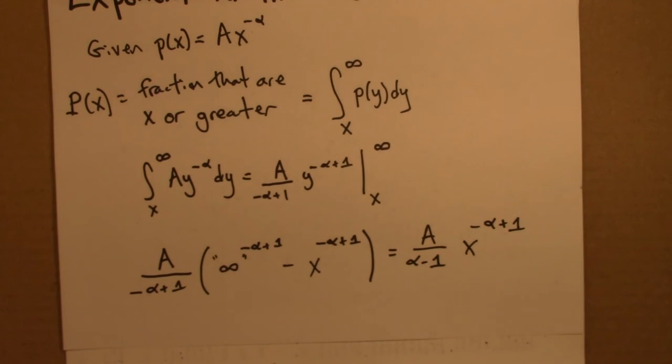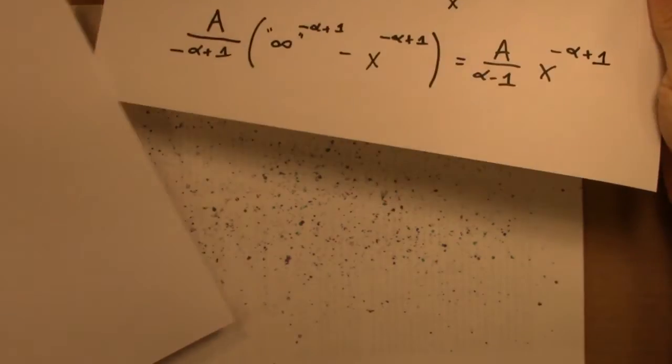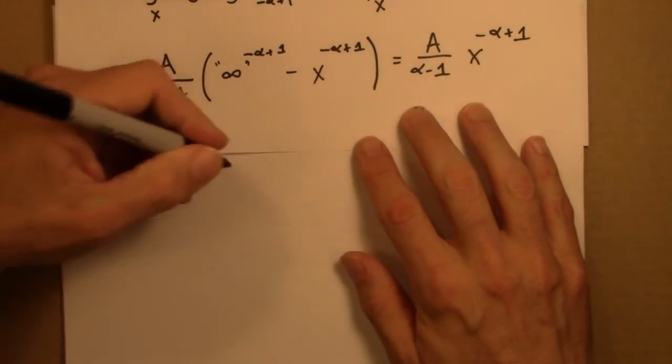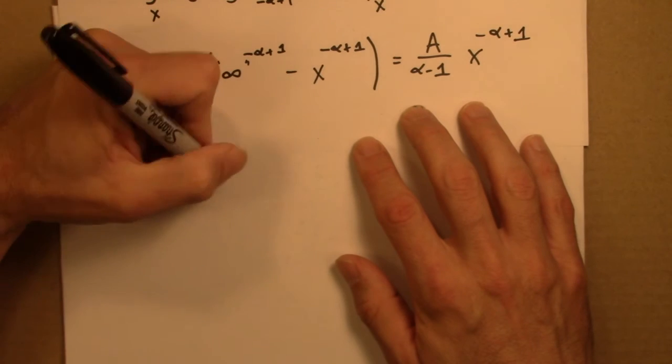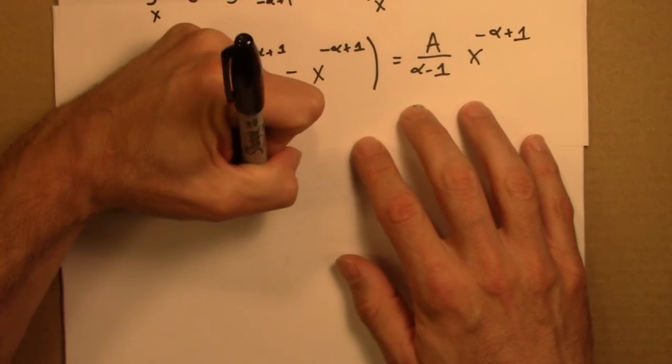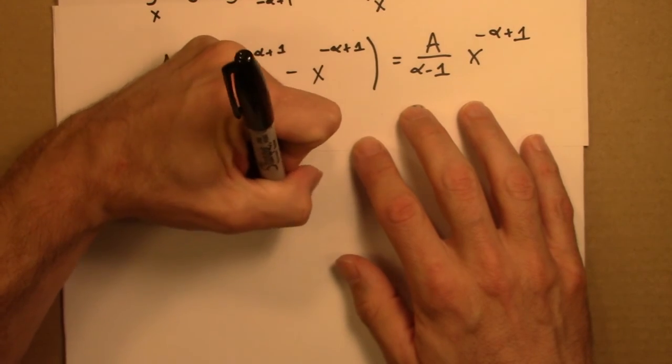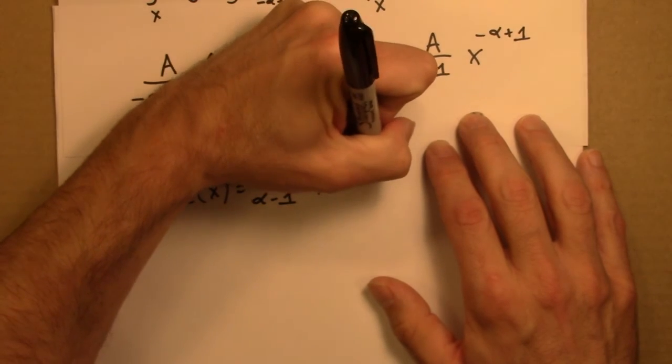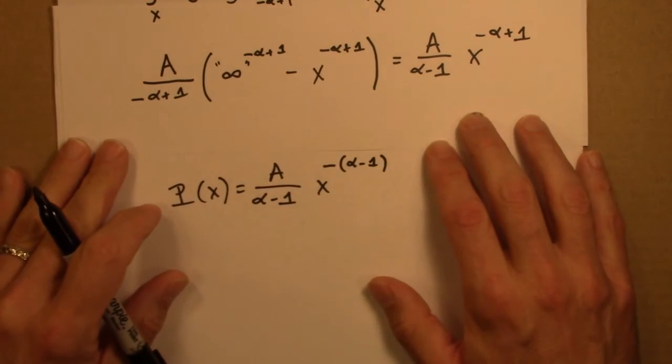So let me end by writing this just a slightly different way. So this is now P of x, it's A over alpha minus 1, x to the minus alpha minus 1.